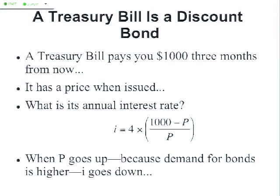Actually, today it's more like four-hundredths of 1% per year — they're selling for $999.90. That's how you calculate the interest rate on a pure discount bond: one that gives you principal back but pays no interest in the meantime. You perform this calculation and calculate the interest rate. As you can see, when P goes up, I goes down.